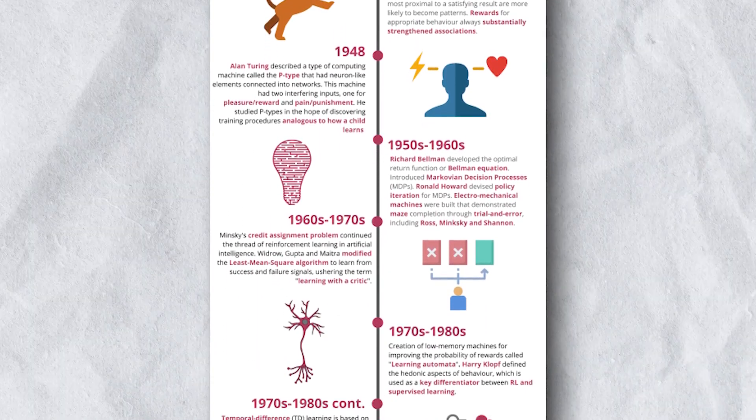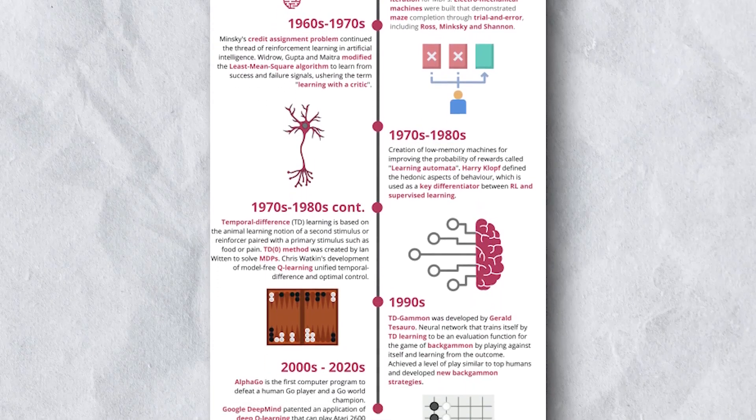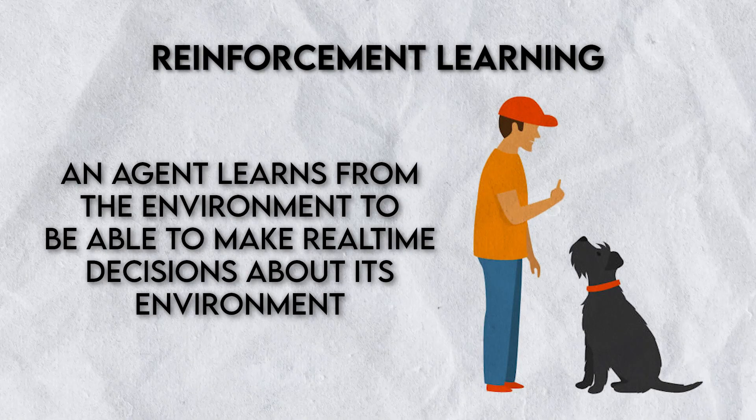Now comes my field — reinforcement learning — which in my opinion is the most exciting type of machine learning at the moment; that's why I chose it and why I'm doing a PhD in it. The foundations were built in the 1980s and 90s, so it's not new, but it's very popular now. Reinforcement learning involves real-time decision making — there's no large dataset, no one-time training. Instead, it's real-time interaction and learning from the environment. In one line: an agent learns from the environment to make real-time decisions.